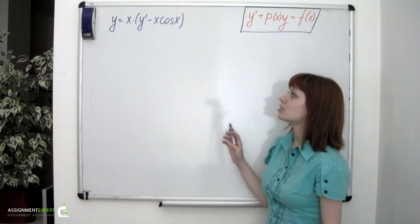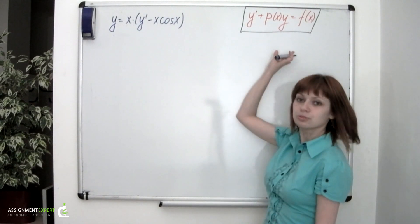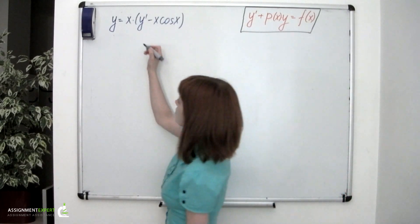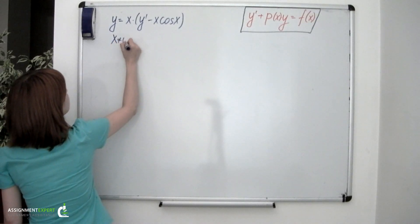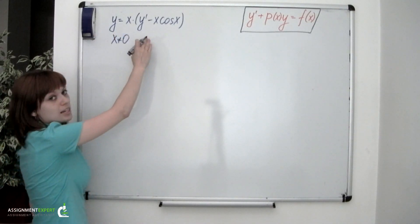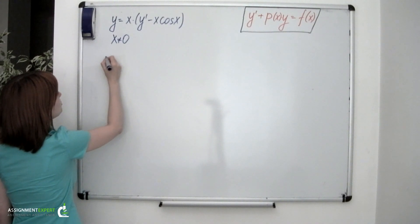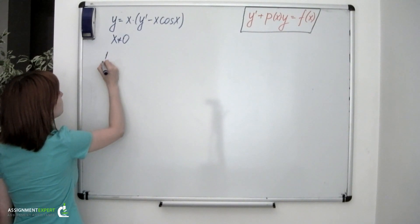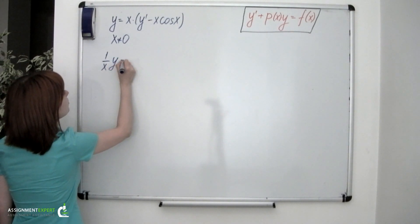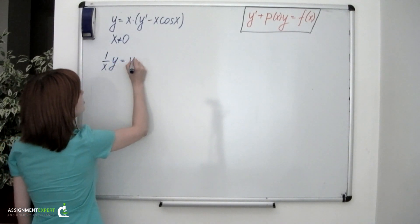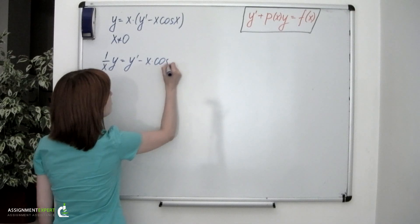The first thing we're going to need to do is put this given equation into the general form. Assuming that x isn't equal to 0, we can divide both the left and right sides of this equation by x, and so we'll obtain the following: 1 over x times y equals y' minus x times cosine of x.